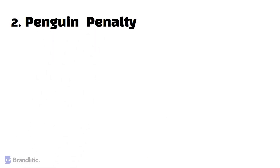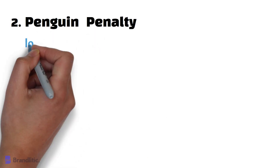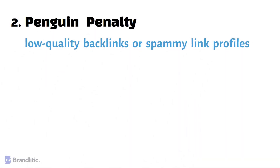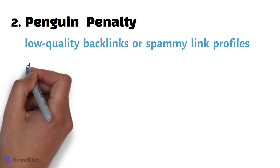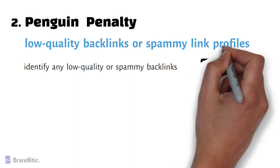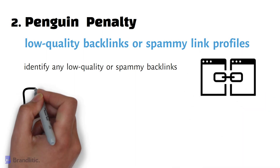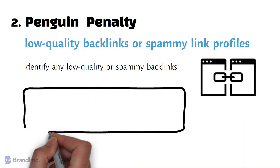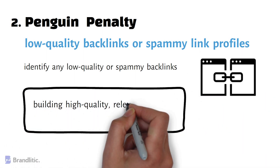The Penguin Penalty targets sites with low-quality backlinks or spammy link profiles. To fix this penalty, you need to identify any low-quality or spammy backlinks pointing to your site and remove and disavow them. You should also focus on building high-quality, relevant backlinks to your site.